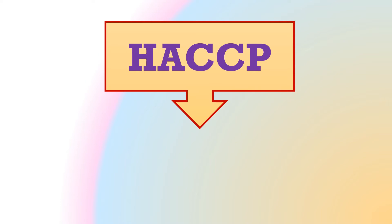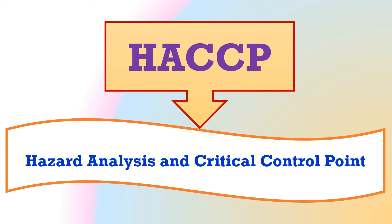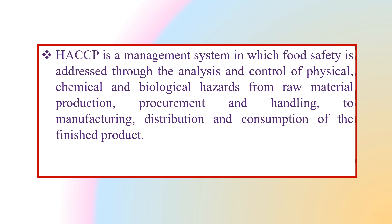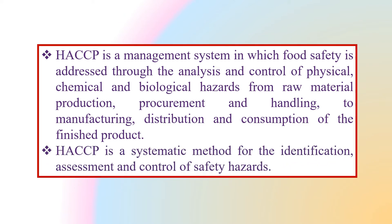HACCP, usually pronounced as HACCP, has a full form of Hazard Analysis and Critical Control Point. HACCP is a management system in which food safety is addressed through the analysis and control of any type of hazards, whether physical, chemical or biological, starting from raw material production up to the consumption of the finished product. In short, HACCP is a systematic method for the identification, assessment and control of safety hazards.